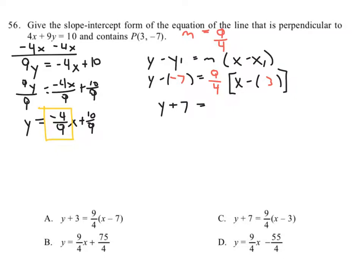y plus 7 equals 9 fourths(x minus 3). This is in point-slope form. If you look up top, they want it in slope-intercept form, so that means we have to write it in y equals mx plus b form. So we're not done yet.